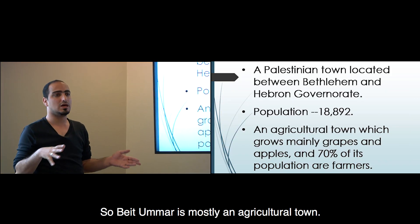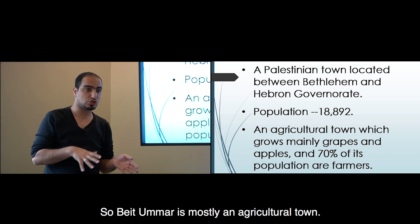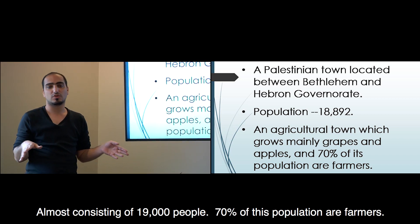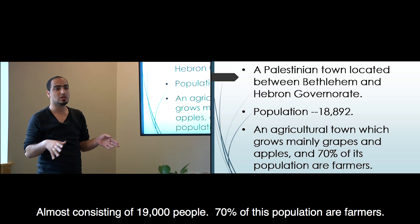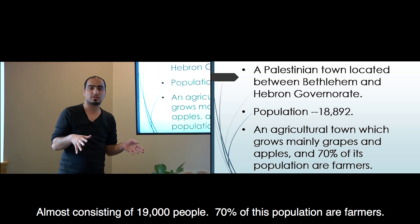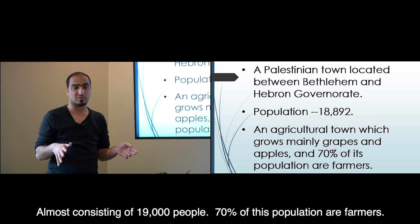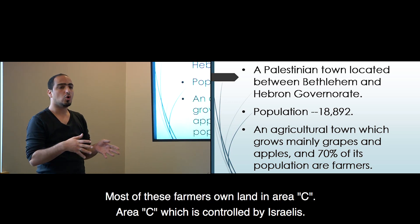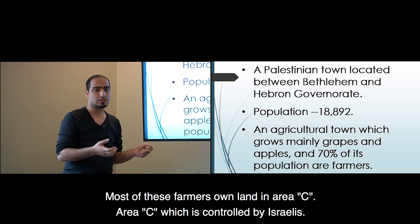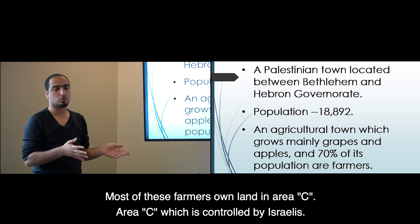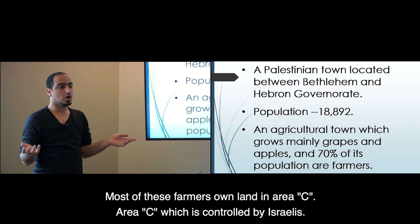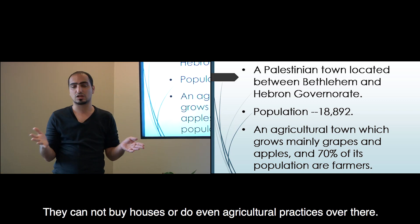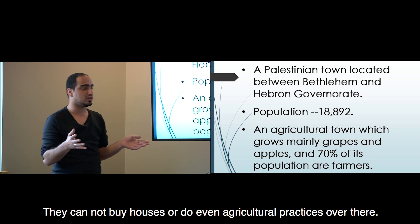Beit Omar is mostly an agricultural town, consisting of almost 19,000 people. 70% of this population are farmers. Most of these farmers own lands in Area C, which is controlled by Israel. They cannot build houses or do even agricultural practices there.